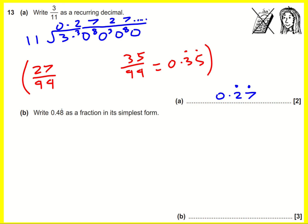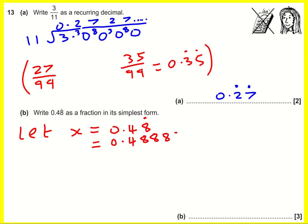We're then asked to do the opposite: can we go from a recurring decimal back to a fraction? Here's the standard approach. Let x equal 0.48 recurring — this time just the 8 is recurring, so I'll write it in its fuller form with some eights. The approach is to do a subtraction: multiply through by 10, because there's just one digit being repeated. That gives 10x = 4.8888... and so on.